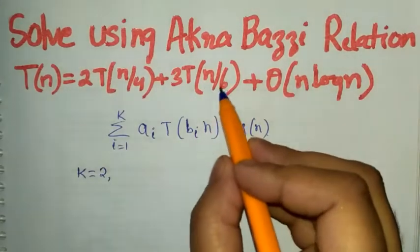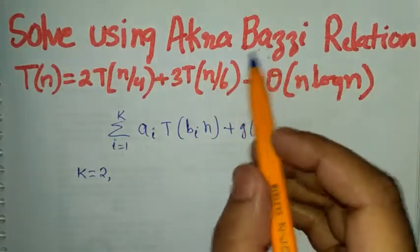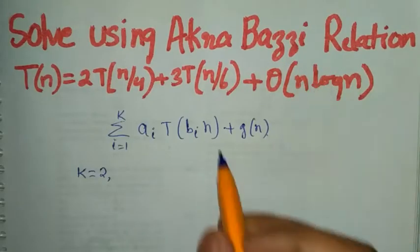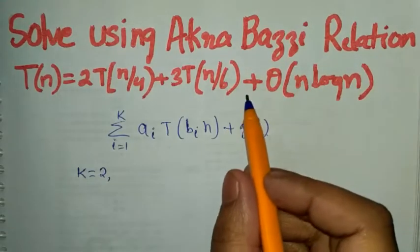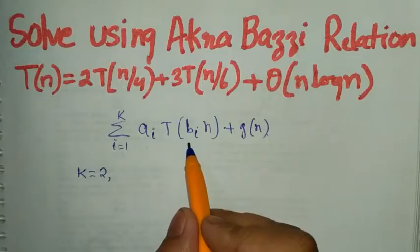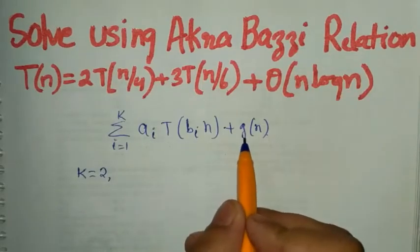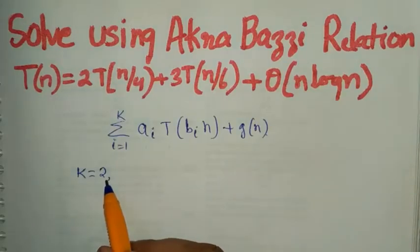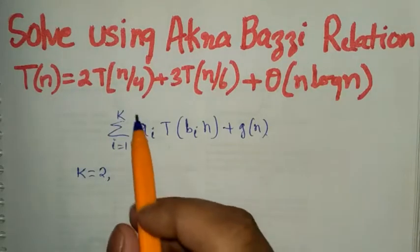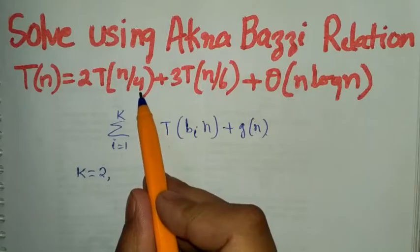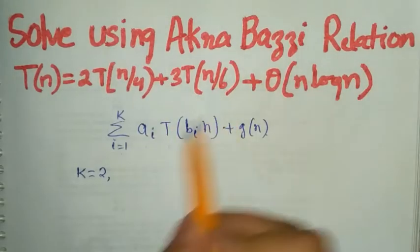We are going to solve this equation using the Akra-Bazzi recurrence relation. The general form of the Akra-Bazzi recurrence relation is given. From this, we have to find the values of a, b, g(n), and k. Here k equals 2, because there are two different subproblems: T(n/4) and T(n/6).